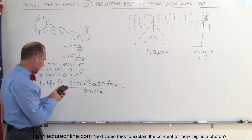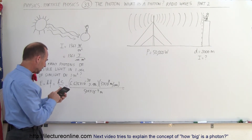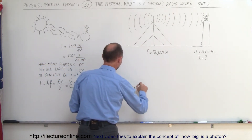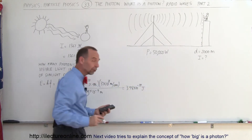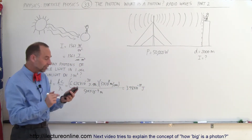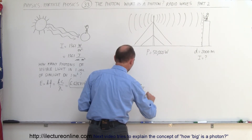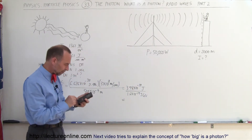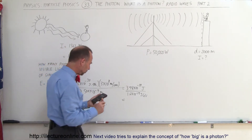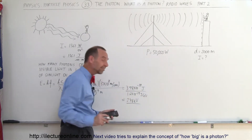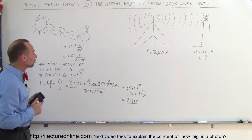Computing 6.626×10⁻³⁴ times 3×10⁸ divided by 500×10⁻⁹ equals 3.98 times 10 to the minus 19 joules. Converting that to electron volts, we divide by 1.6 times 10 to the minus 19 joules per electron volt, and we get 2.48 electron volts. So that's the energy for a single photon of visible light.